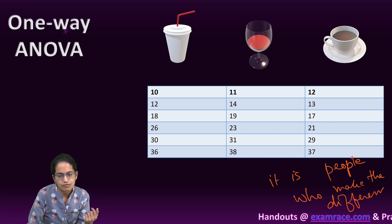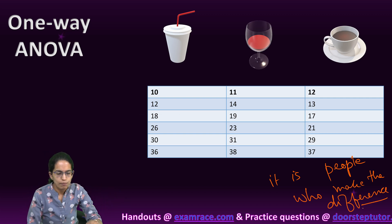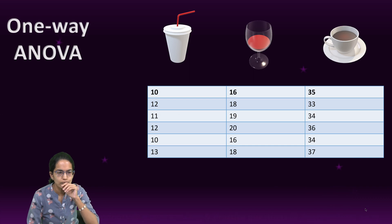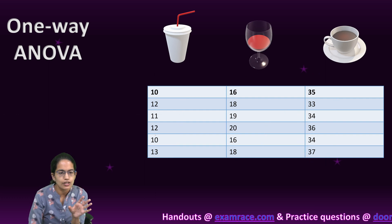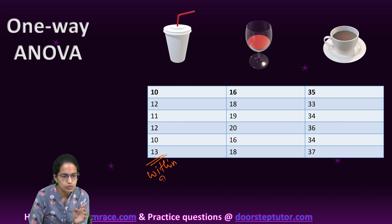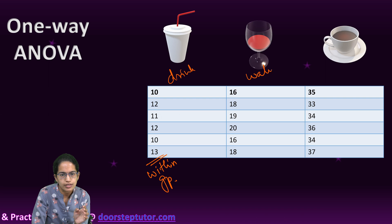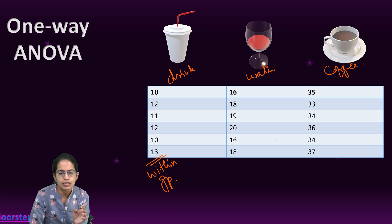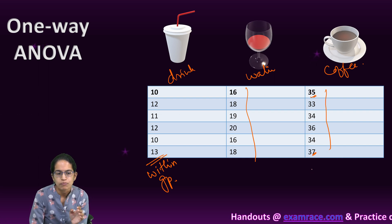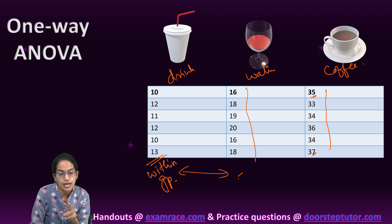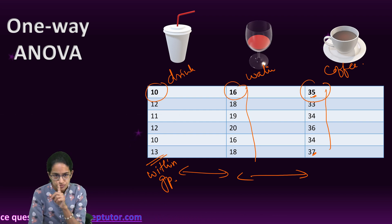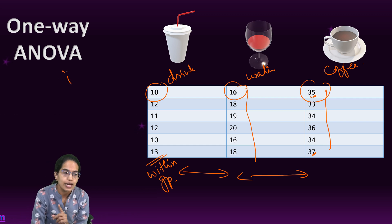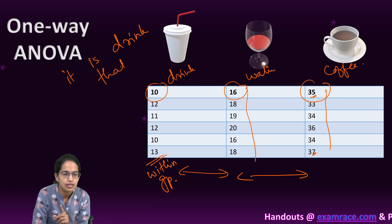Now with the same three groups but different reaction time values, within each group we see very similar results — very little within-group variation, with values close by from 35 to 37. But between groups there is significant variation: reaction time is very low with the drink, a little higher with water, and extremely high with coffee. From this we can infer that it is the drink that makes the difference.